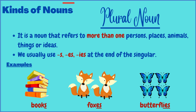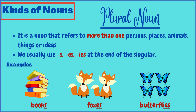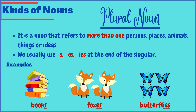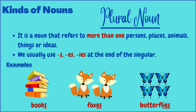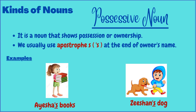A plural noun denotes more than one person, place, animal, thing, or idea. We usually add 's,' 'es,' or 'ies' at the end of a singular noun to change it into a plural. We will discuss the specific rules in a separate lecture. For example, 'book' becomes 'books' by adding 's'; 'fox' becomes 'foxes' by adding 'es'; and 'butterfly' becomes 'butterflies' by adding 'ies.'